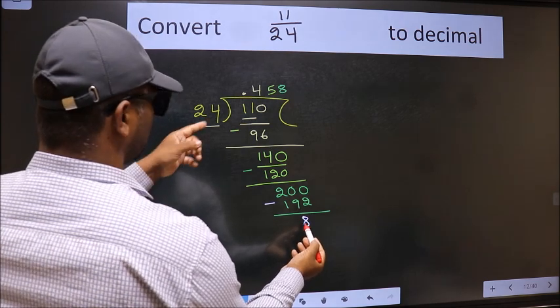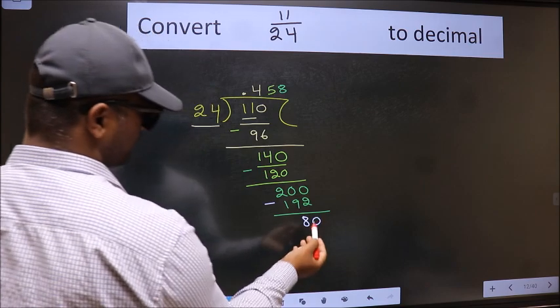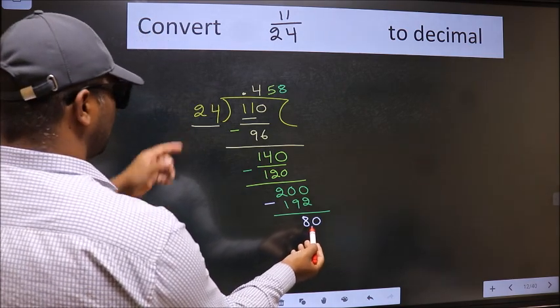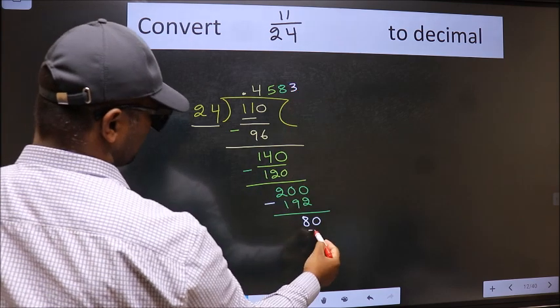8 is smaller than 24, already have decimal, so directly take 0. 80. A number close to 80 in 24 table is 24 threes, 72.